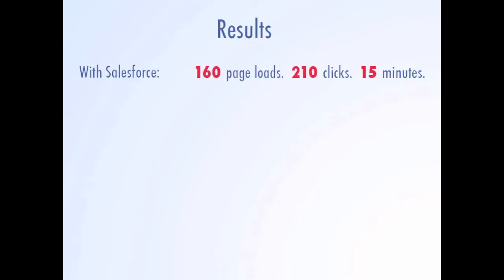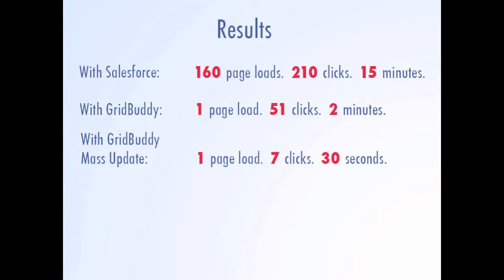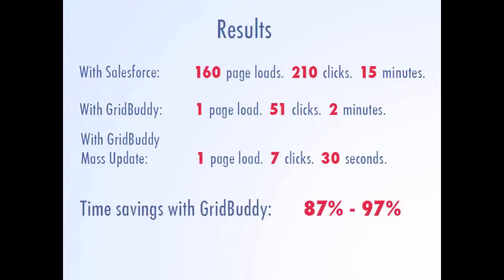So to recap, our edits in Salesforce took us 160 page loads, 210 clicks, and 15 minutes. With GridBuddy, it took just one page load, 51 clicks, and 2 minutes if we edited each opportunity stage individually. And with GridBuddy mass update, it can take one page load, as little as 7 clicks and 30 seconds. With GridBuddy, we can save up to 97% of the time meeting this data management challenge over the time it would take using Salesforce's standard functionality — a dramatic savings.